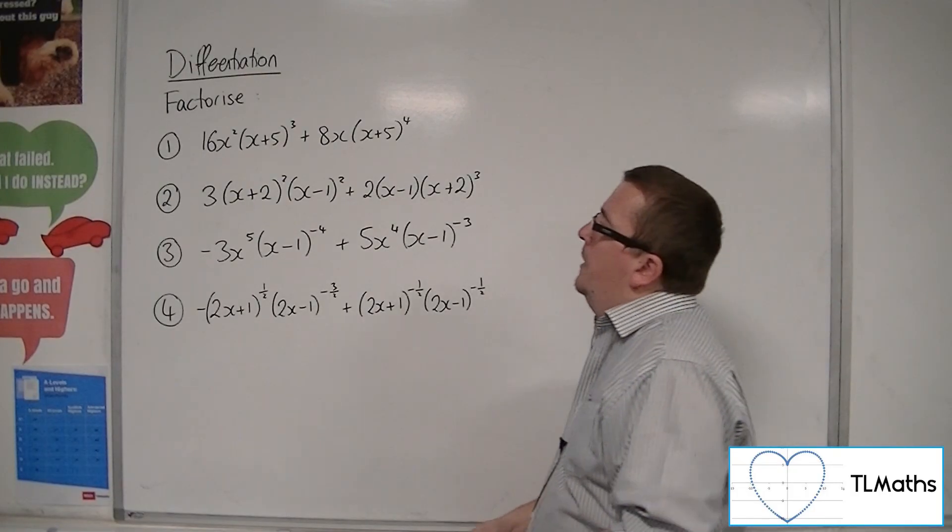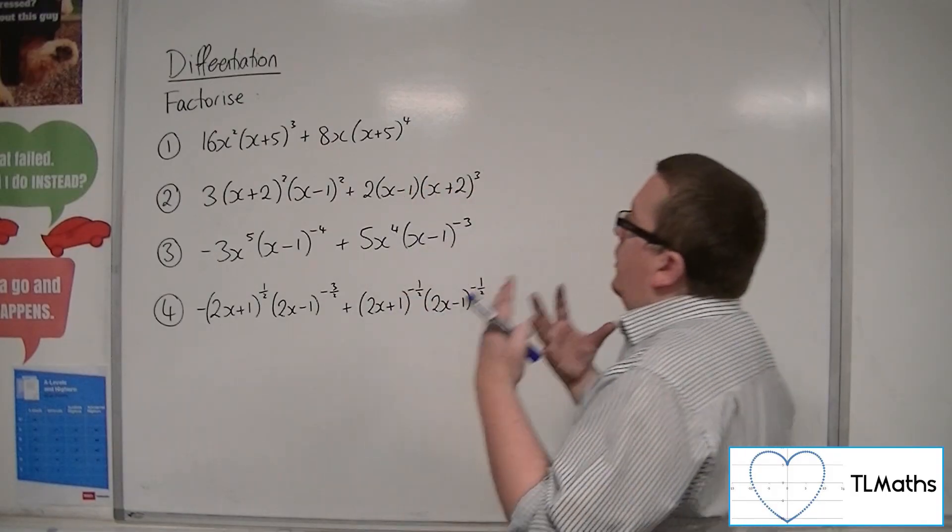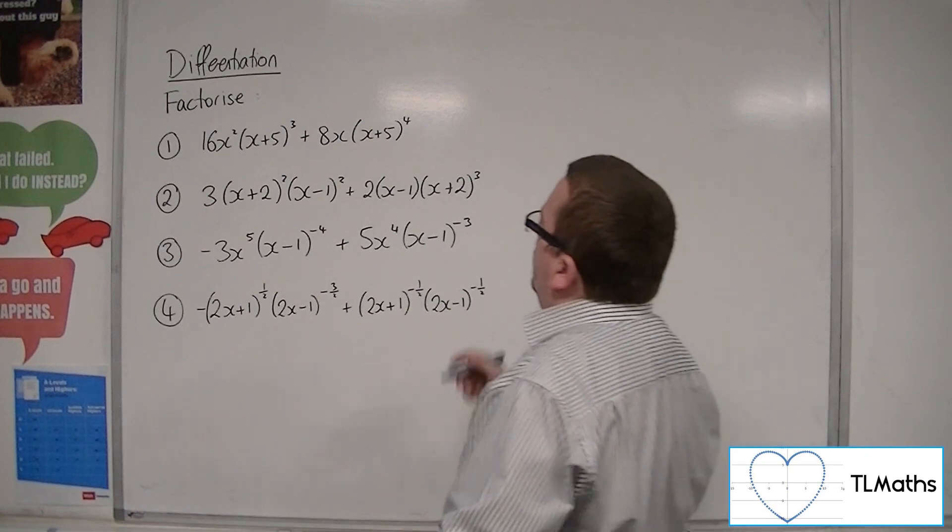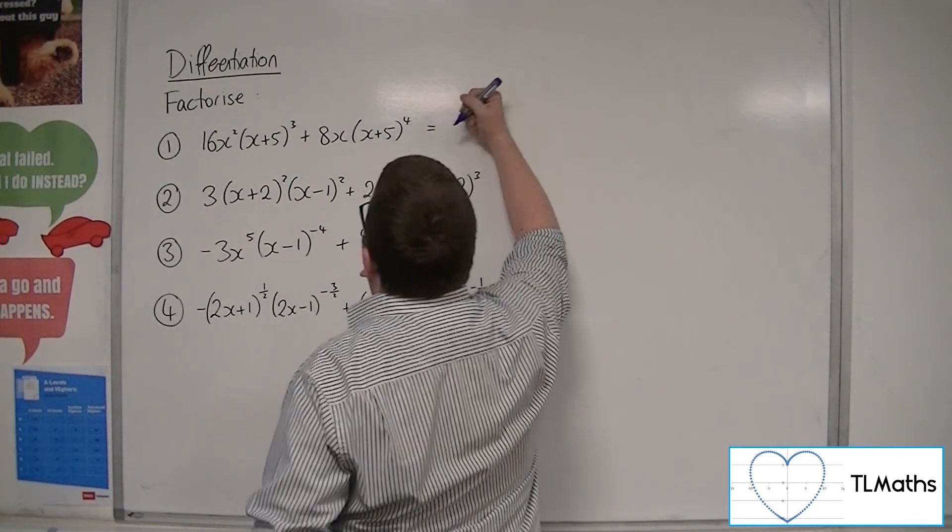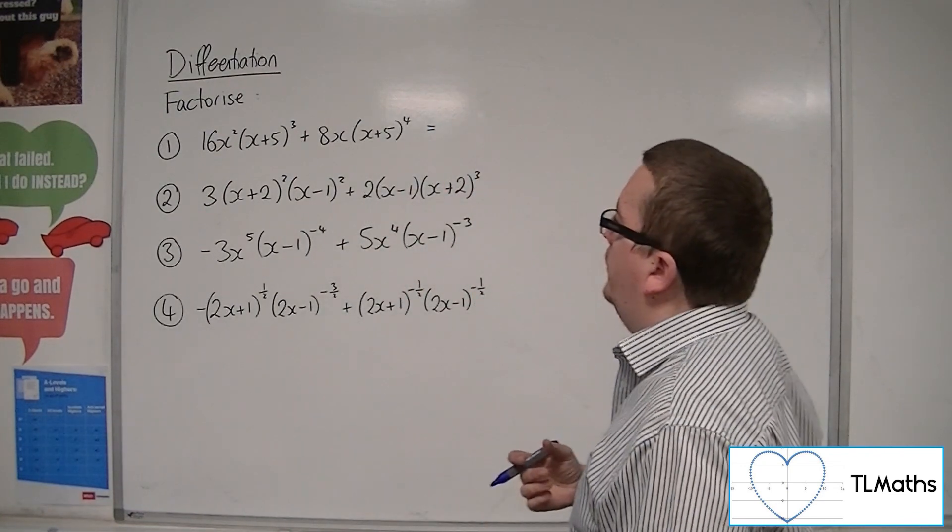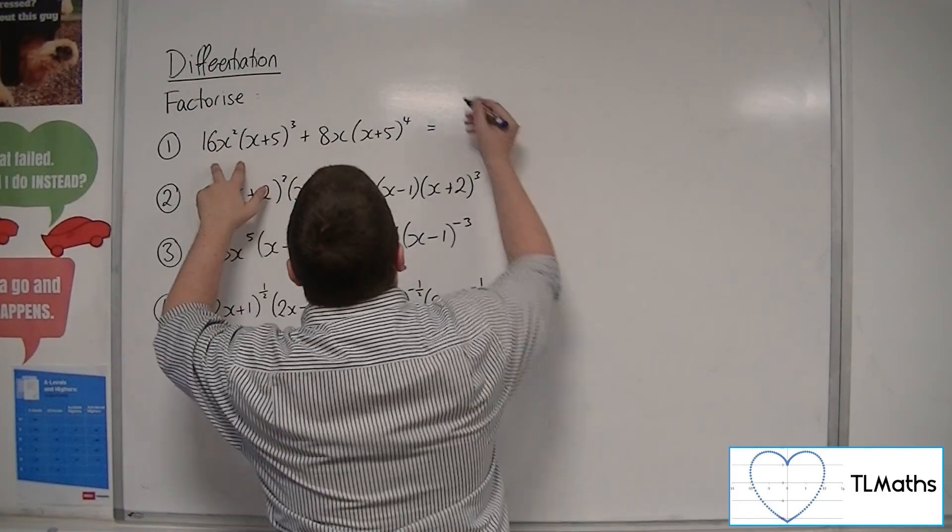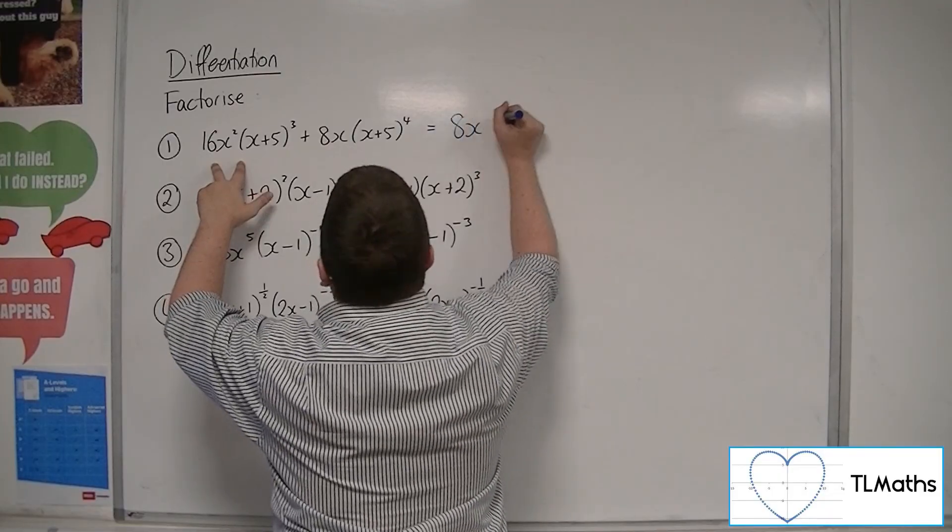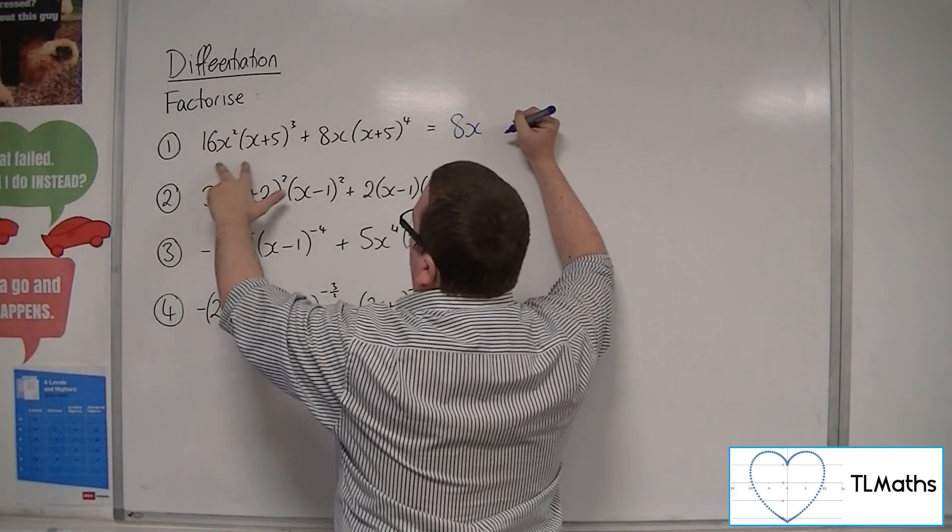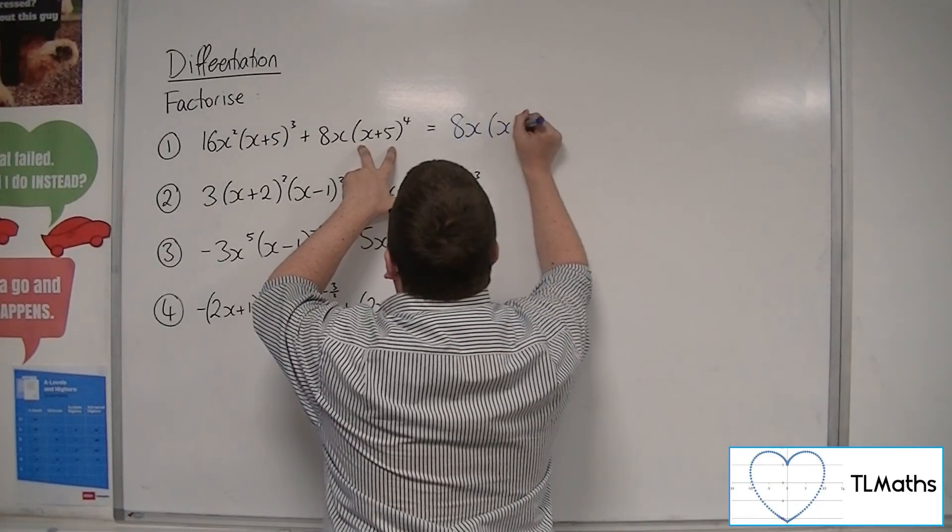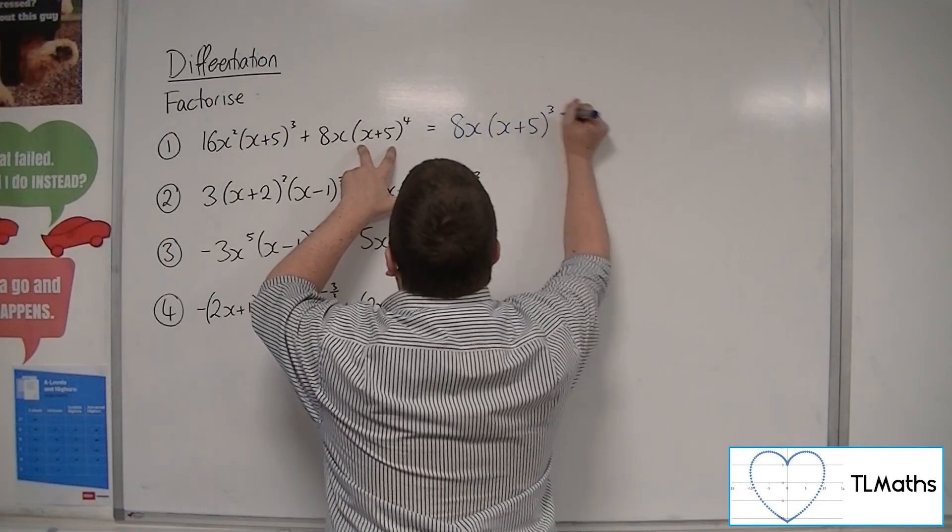So if we have a look at number 1, we've got 16x²(x+5)³ + 8x(x+5)⁴. So we're looking for things that we can pull out that is common to both of these terms. We can definitely pull out an 8 and definitely pull out an x, so 8x can definitely come out. Now we've got (x+5)³ and (x+5)⁴, so we can bring out (x+5)³ from both of those terms.